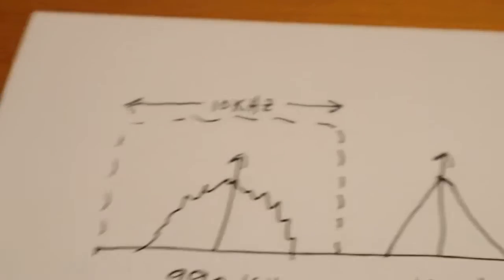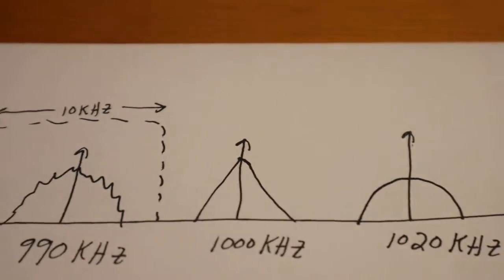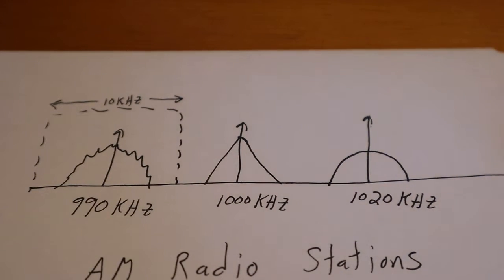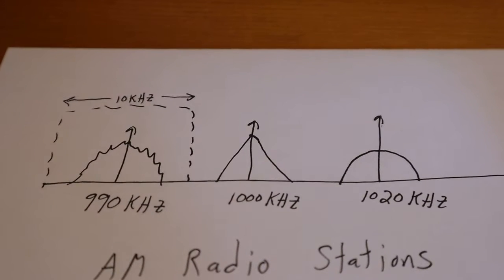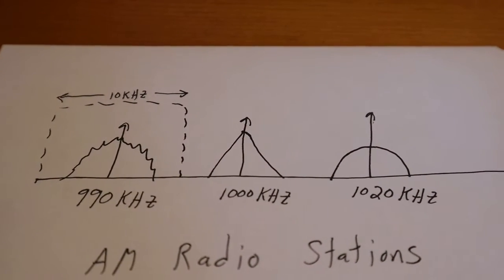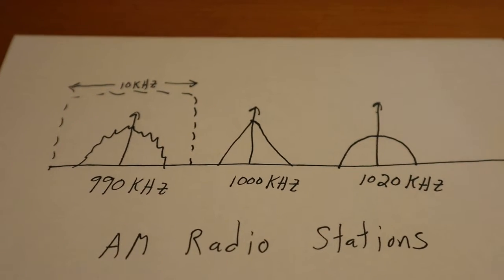Alright, so the main problem is we've got three radio stations here, as you can see. So we've got three, let's just say AM radio stations. One guy at 990 kHz, another radio station at 1000 kHz, and another radio station at 1020 kHz.